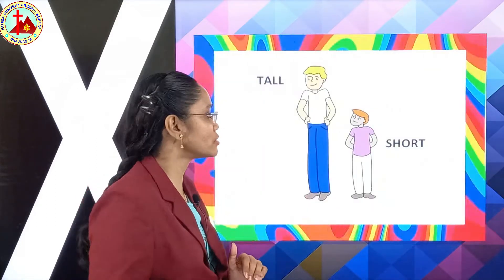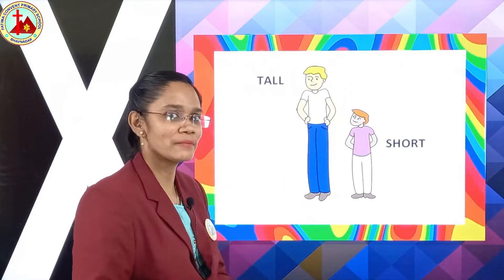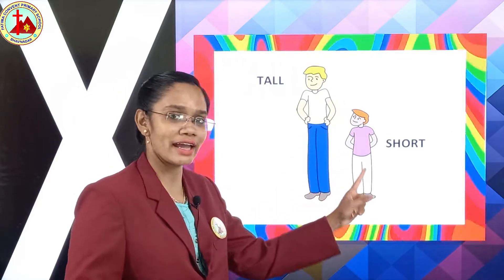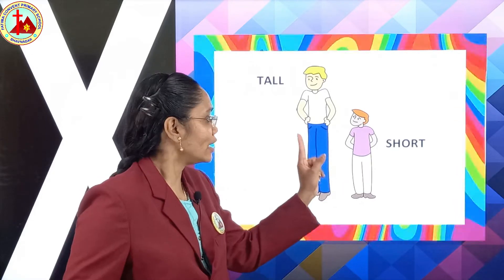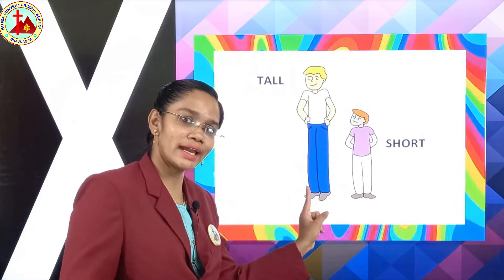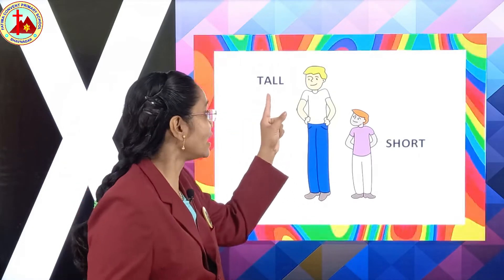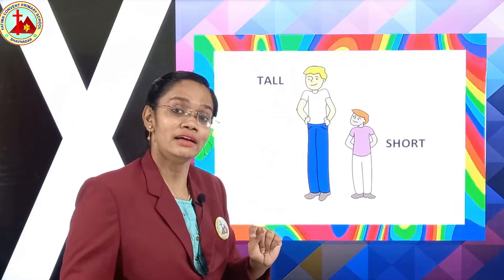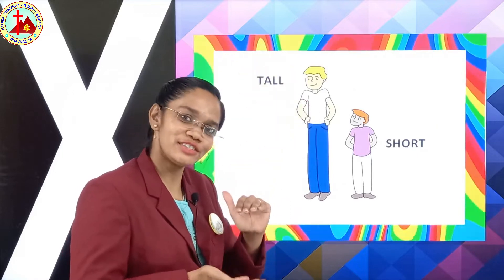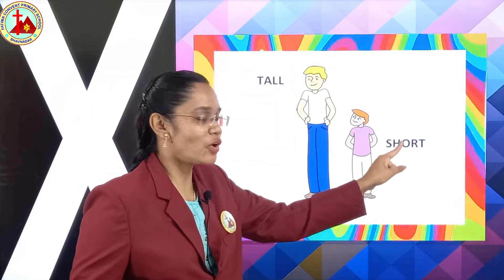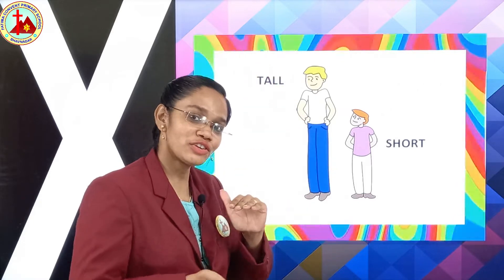You have to repeat after me. See, who is here? He is a father and he is his son — like you and your daddy. Your daddy is tall — T-A-double-L. And you are short — S-H-O-R-T. Tall, short.